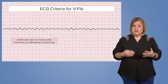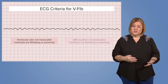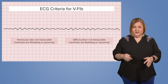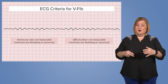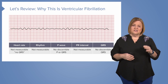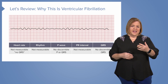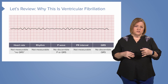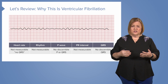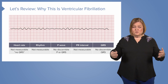You cannot measure the ventricular rate because the ventricles are fibrillating or quivering. Can't measure the QRS because the ventricles are fibrillating or quivering. So when we review why this is ventricular fibrillation, it's not measurable because there's no QRS as far as heart rate. We can't identify a regular rhythm because it's fibrillating. The P wave isn't there, and we don't have a QRS, so we can't do the PR — none of these are appropriate.